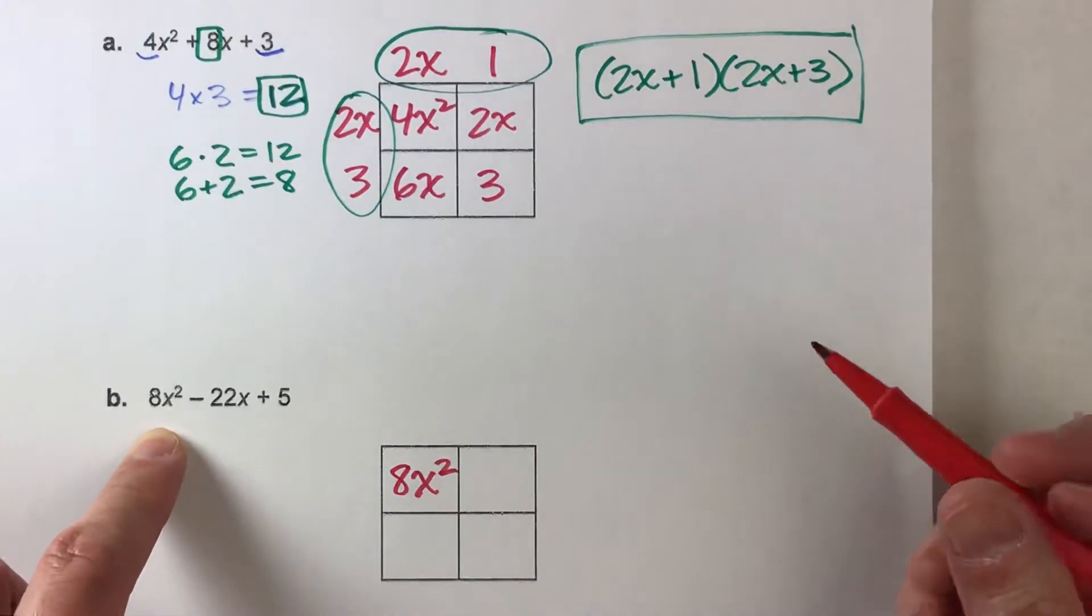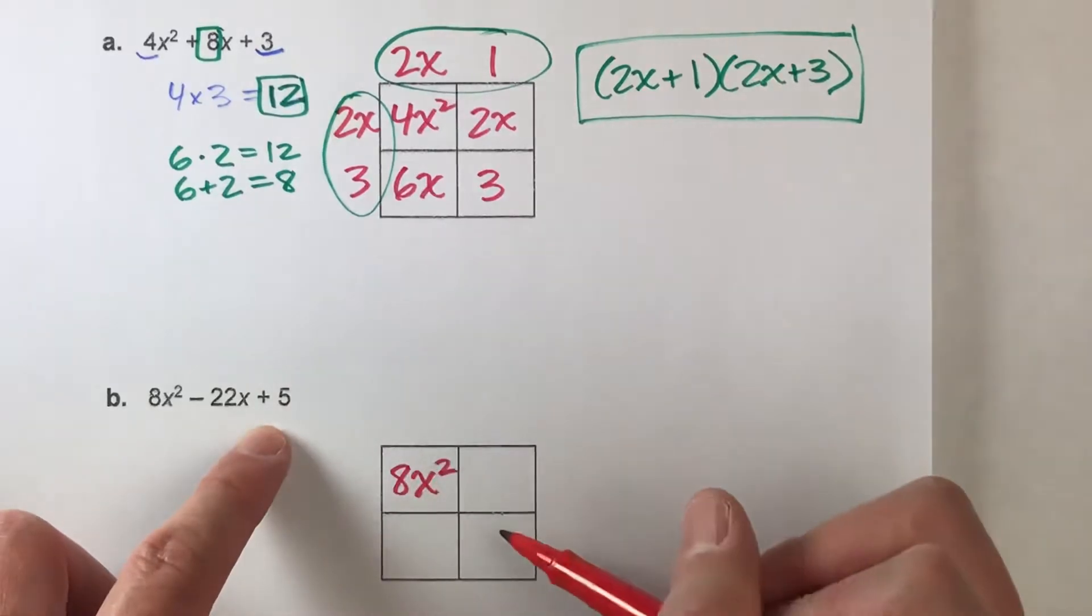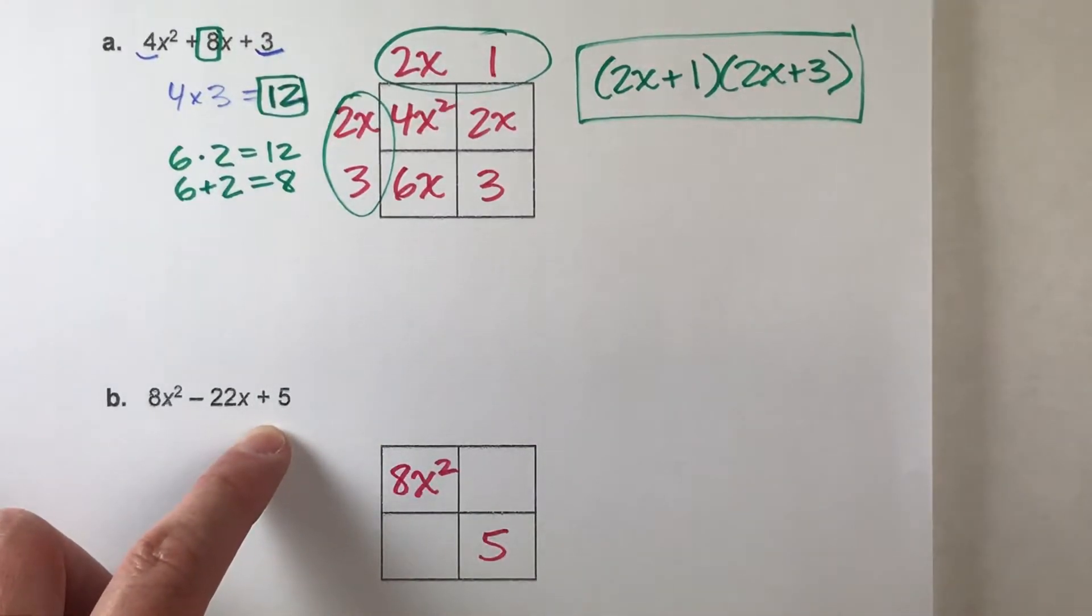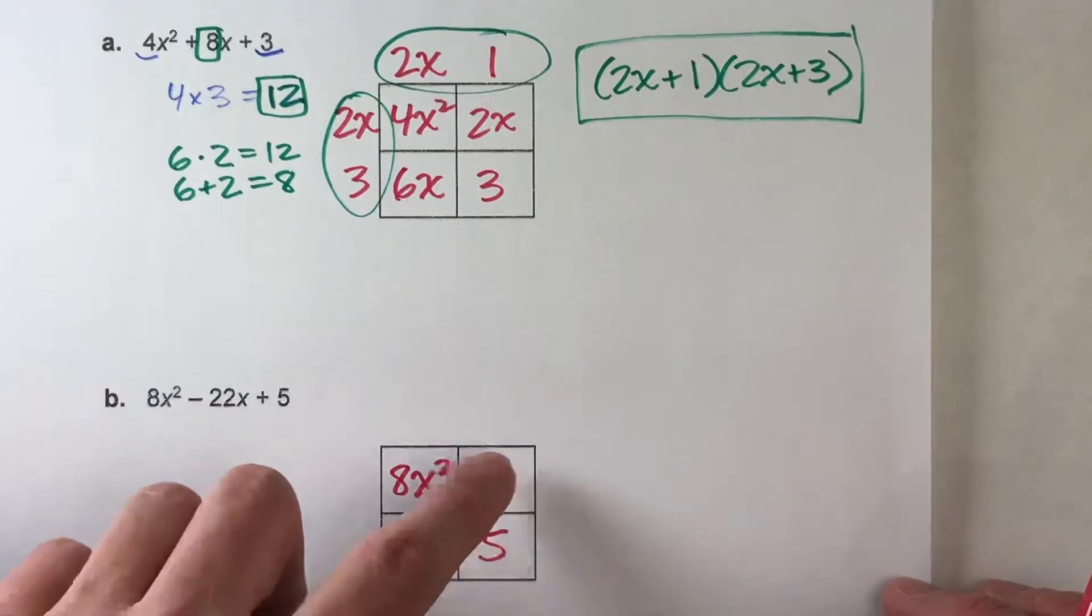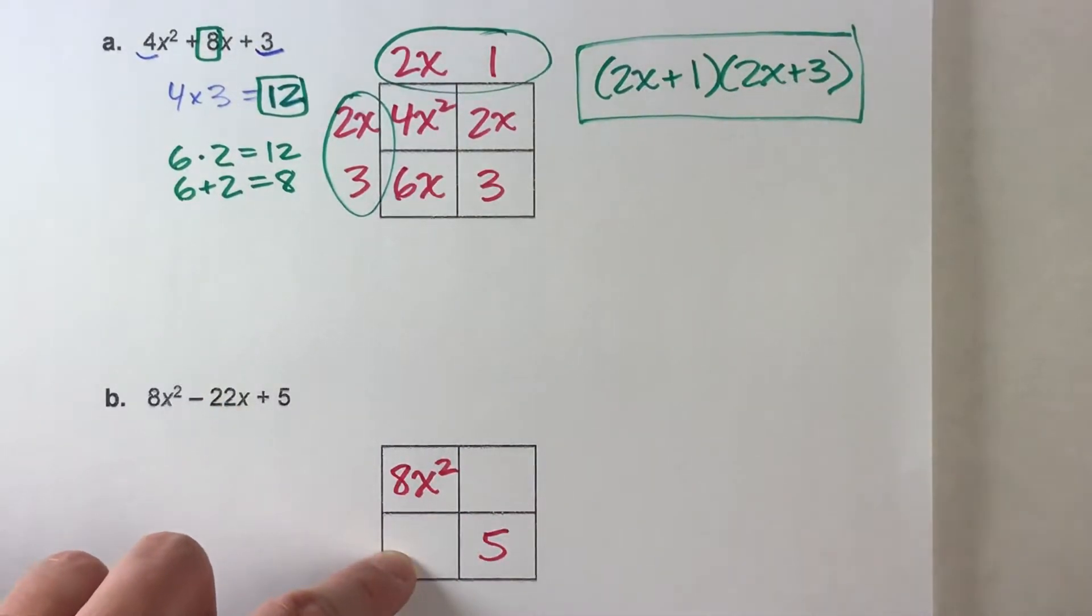Next, we put our constant term, that positive 5, right there. And we're going to break up the x term into two parts. But, how are we going to break it up?